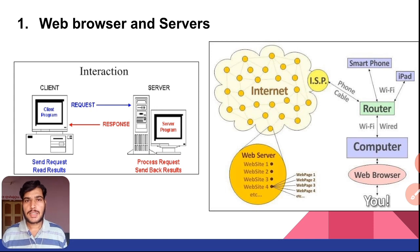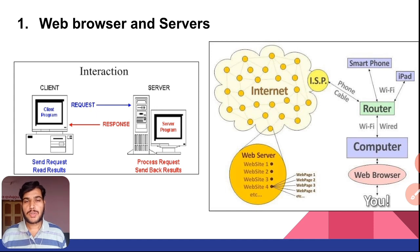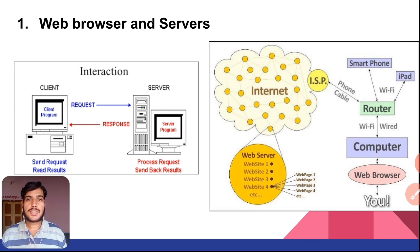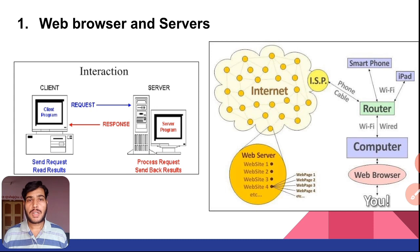Let us understand what we mean by web client and server. Clients and servers are nothing but machines. How we differentiate whether a machine is a client or a server is based on the application executed on that machine. In a client, we use client-side applications — for example, we use web browsers to send requests to the server. In servers, we use server-side applications using certain programming languages. The main task of a client is to always send a request to the server. The server accepts the request from the client, processes it, and generates a proper response. This is how interaction happens between web browsers and a web server.